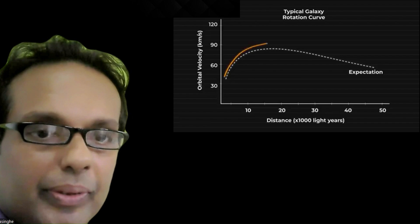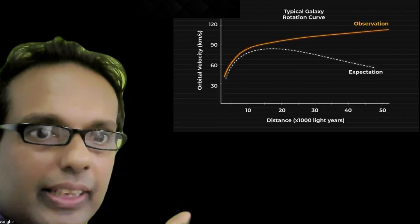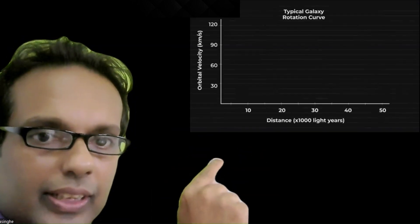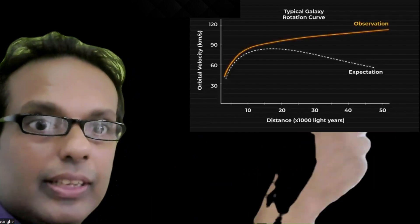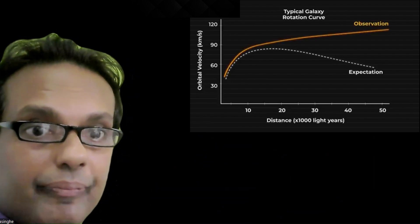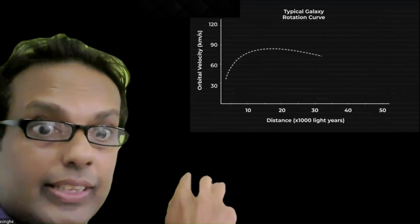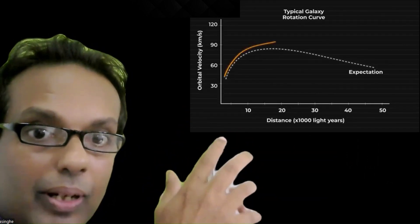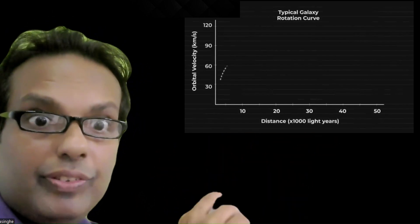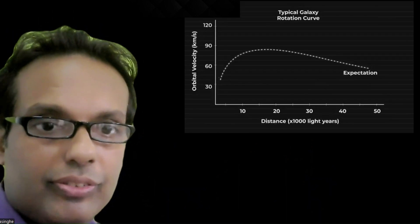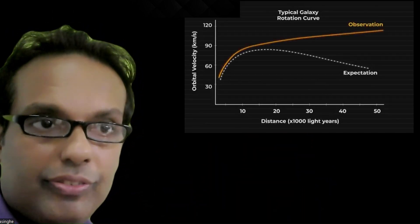But it didn't happen. When you go further away from the central mass in the galaxy, the speed of the stars further and further away is not decreasing — it's actually increasing. So there should be some unknown kind of matter inside the galaxy exerting gravitational forces on these stars. This gives evidence for the existence of dark matter, an indirect observation of dark matter.